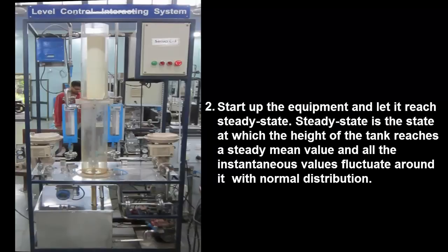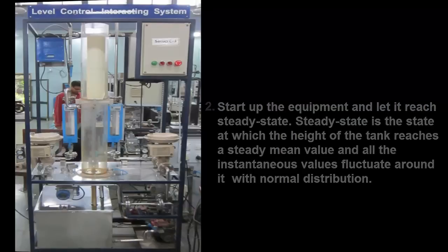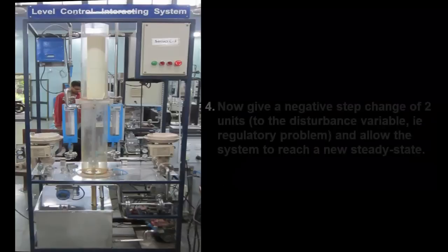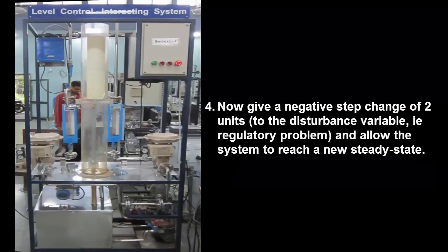Next start up the equipment and let it reach steady state. Steady state is a state at which the height of the tank reaches a steady mean value and all the instantaneous values fluctuate around it with a normal distribution. When the system reaches steady state give a positive step change of two units from the existing value using LabVIEW and wait for the system to reach a new steady state. Now give a negative step change of two units and allow the system to reach a new steady state.